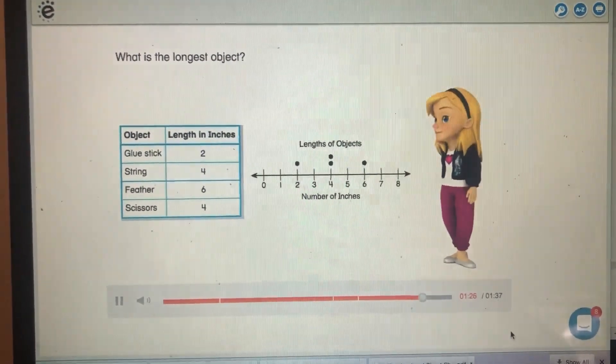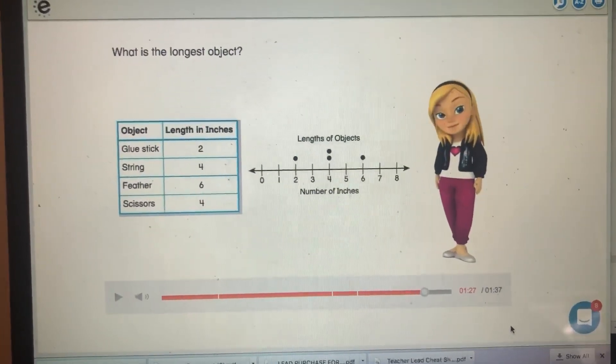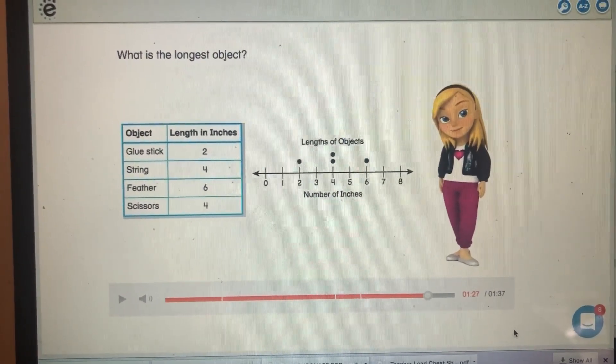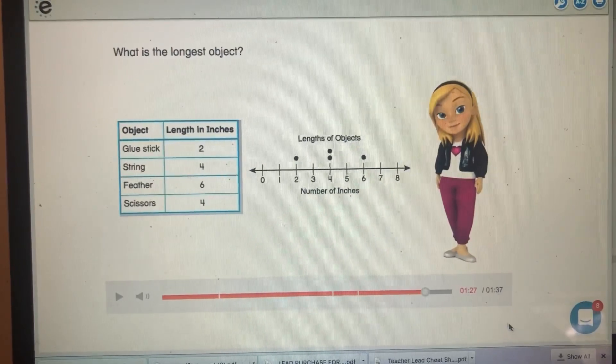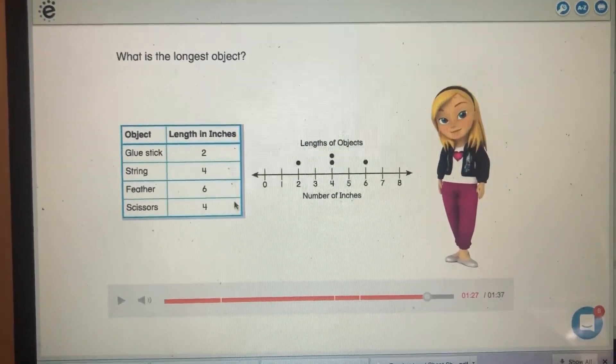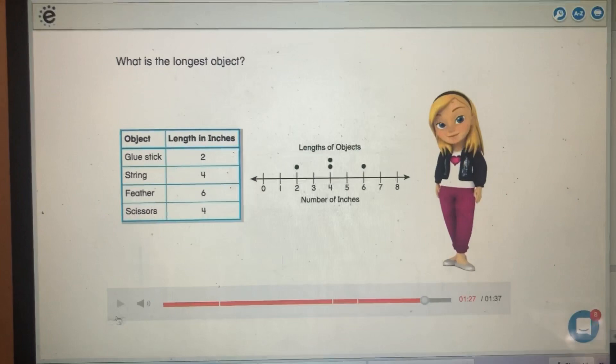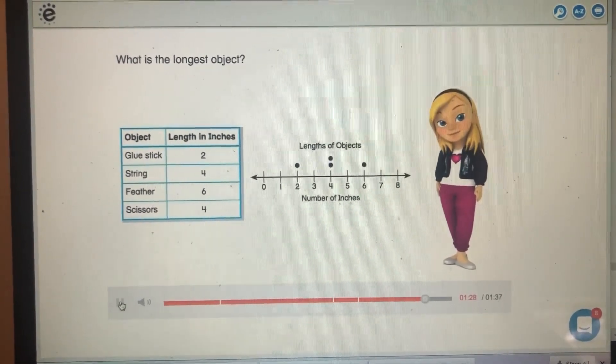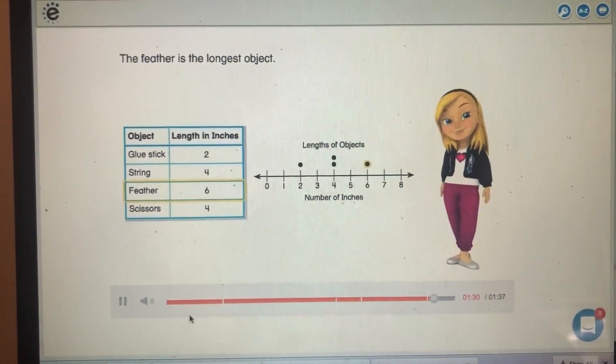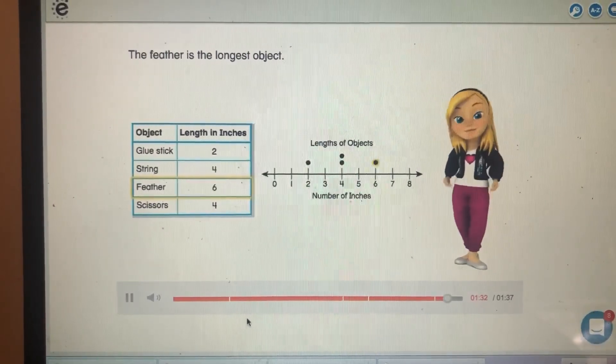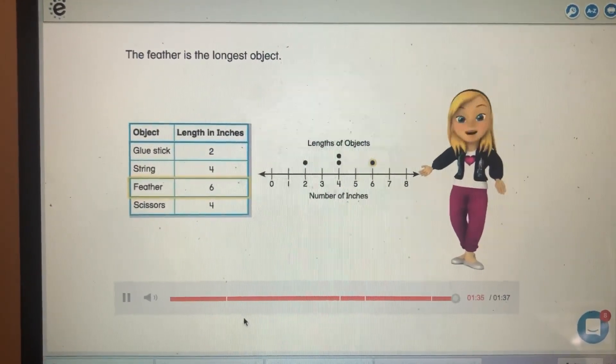What is the longest object? Well, the six is the biggest number, so the six is the feather. The feather is the longest object. Now you know how to use a line plot to display data.